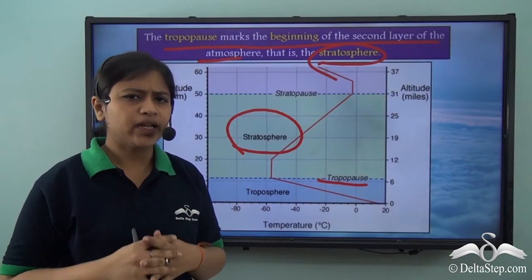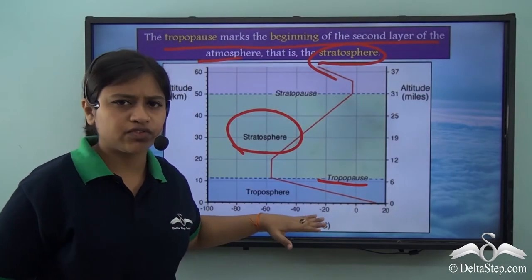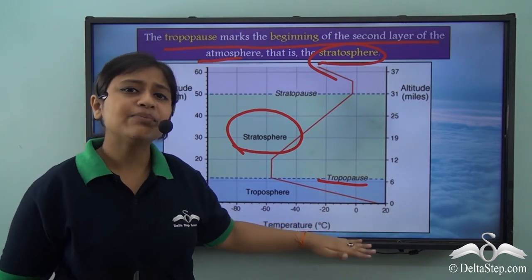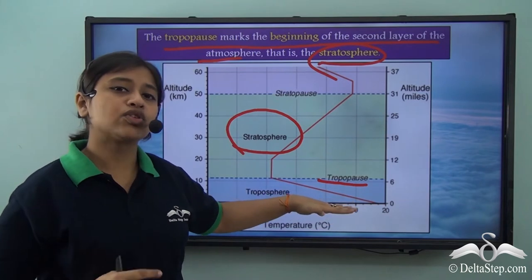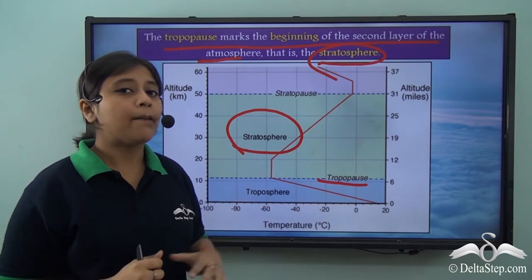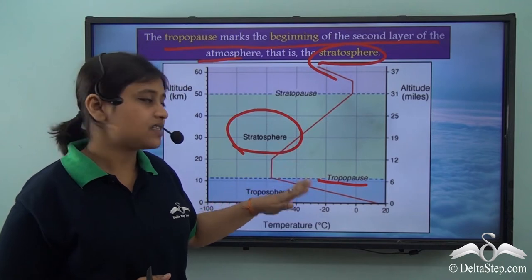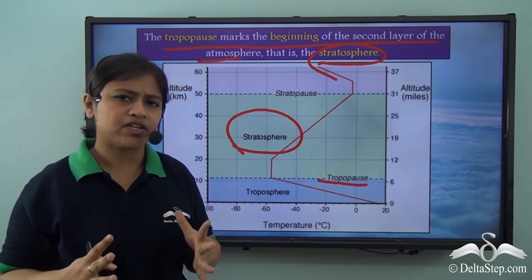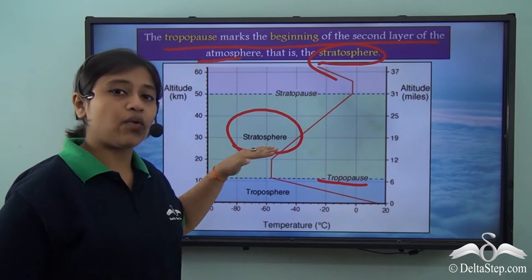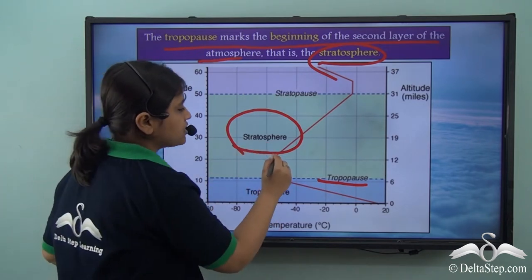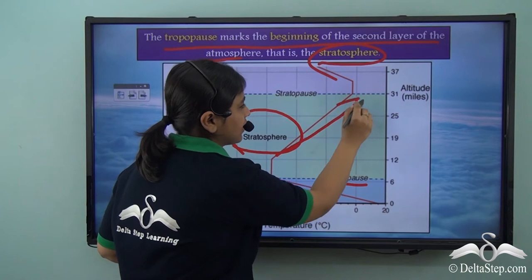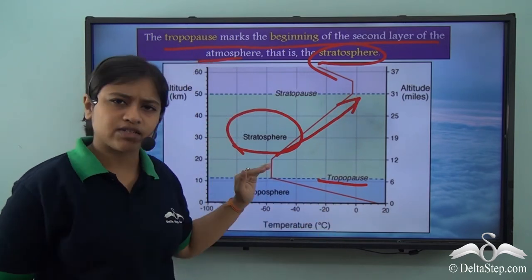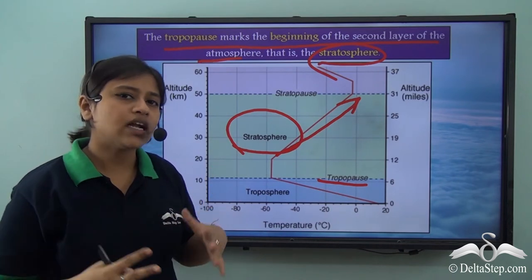In the troposphere, the temperature keeps falling as we go to higher altitudes. But when we come to the second layer, after the tropopause where there is no mixing of temperatures, in the stratosphere the temperature starts gradually rising. So as we go higher into the stratosphere, it gets hotter and hotter.